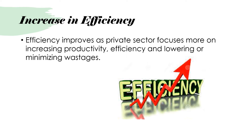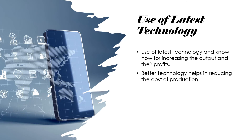Increase in efficiency: Most government industries and services are inefficient and are running in losses. Due to privatization, their efficiency is likely to improve as private sector focuses more on increasing productivity, efficiency, and lowering or minimizing wastage. Use of latest technology: Private domestic investors and foreign investors make use of latest technology and know-how for increasing the output and their profits. Better technology helps in reducing the cost of production.